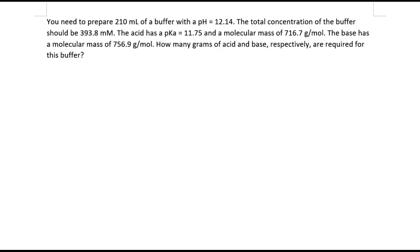In this example we are required to calculate the number of grams of an acid or base to make up a particular buffer. We want to make up 210 milliliters of a buffer with a pH of 12.14 and a total concentration of 393.8 millimolar. The pKa of the acid is 11.75 and we have the molecular mass for the acid and the base. The question is how many grams of acid and base do we need to weigh in — a very typical problem encountered every day in the laboratory.